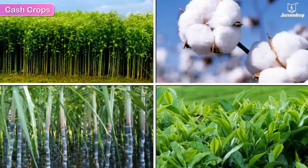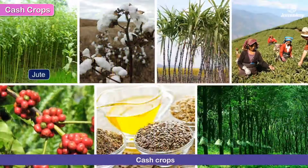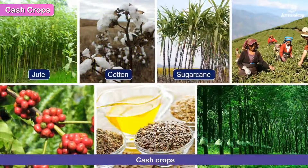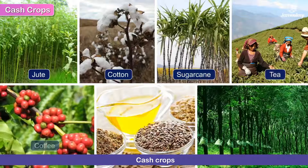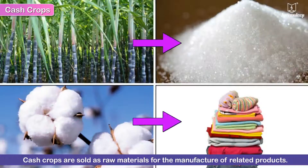Cash crops are those that are grown for their commercial value. Jute, cotton, sugarcane, tea, coffee, oilseeds, and rubber are cash crops. Cash crops are sold as raw materials for the manufacture of related products.